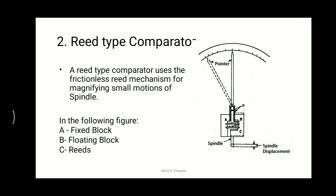The reed-type comparator uses a frictionless reed mechanism for magnifying small motions of the spindle. Very small displacements are also recorded with the help of this reed-type mechanism. You can get the value of the displacement in the form of rotational motion and easily find the reading on the circular scale shown by the pointer.